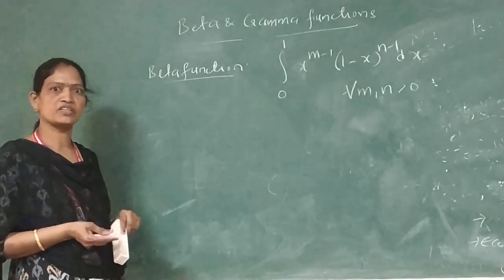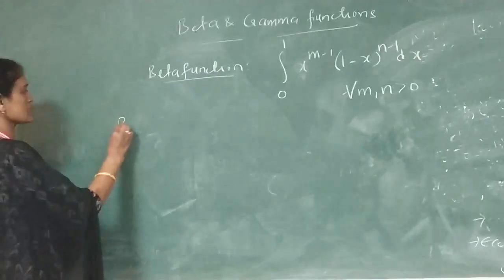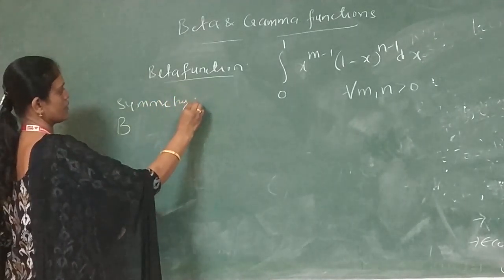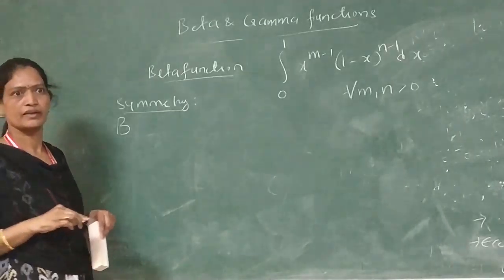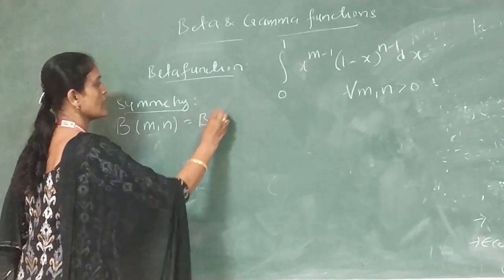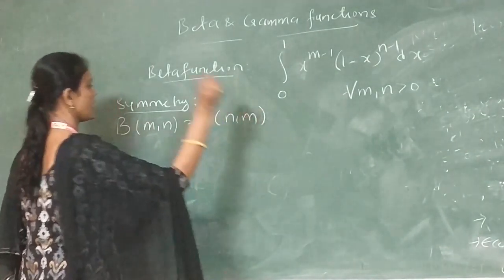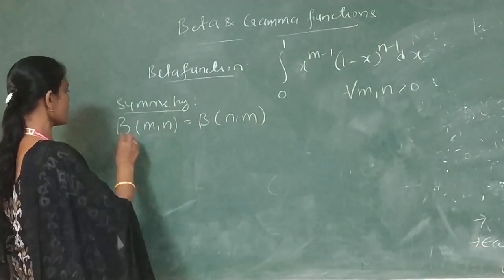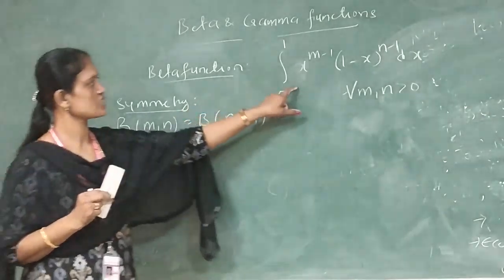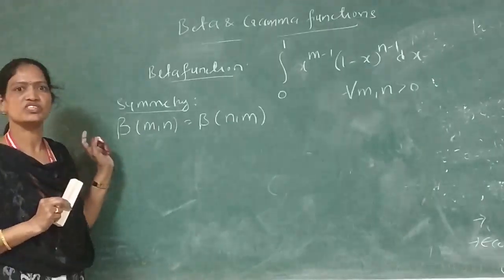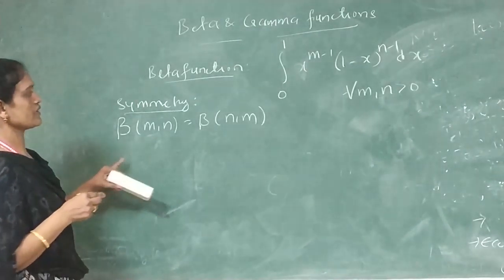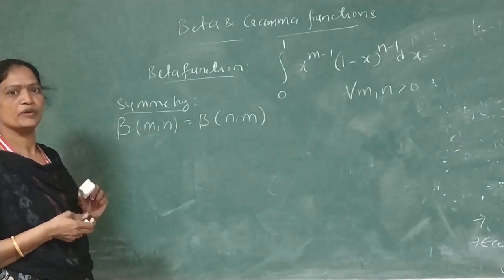We have the properties of beta function. The first property is the symmetric property. Beta function is symmetric, that is, beta(m, n) is equal to beta(n, m). The symbol of beta function is beta(m, n). This is the definition. So, we have to prove that the beta function is symmetric: beta(m, n) equals beta(n, m). By the definition of beta function only, we prove this.